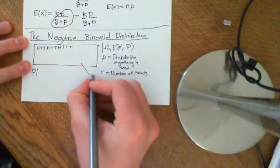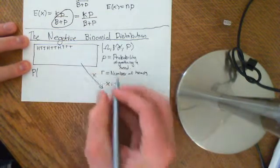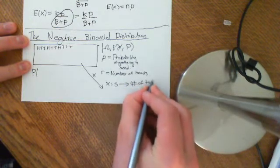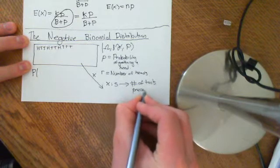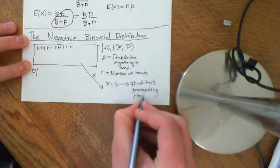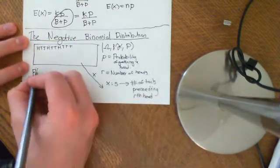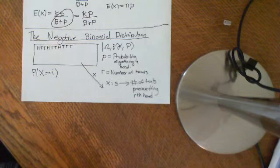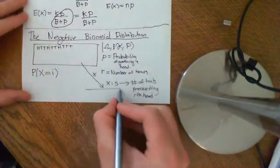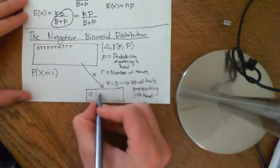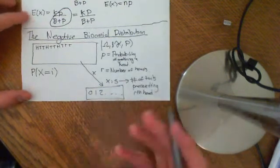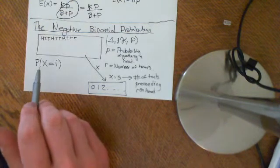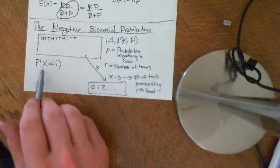Let's define the random variable X, which is going to map any outcome of this probability space onto the number of tails preceding the r-th head. That's a random variable, and we can ask: what is the probability that X equals i? That's the probability mass function. X maps onto the set of all non-negative integers — the lowest number is zero, then one, two, and so on.